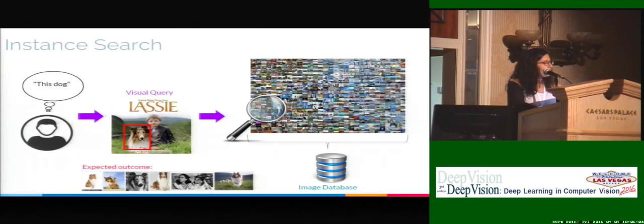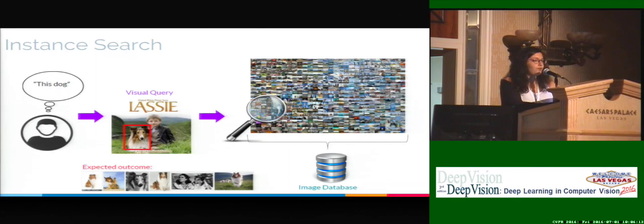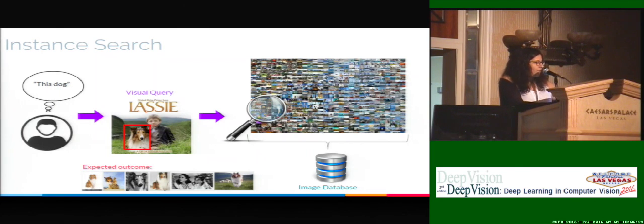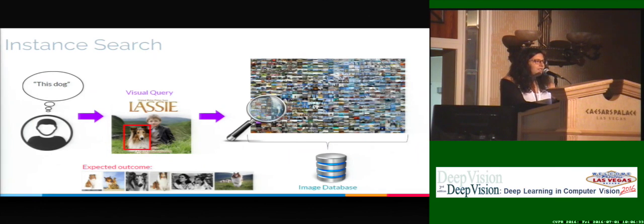In this work, we approached the problem of visual instance search, which is the task of giving a visual query and finding images that are relevant for this query in a big image database. When we refer to instance search, the visual query is defined by a particular instance of a semantic class. For example, we are not looking for images that contain any dog, but we're looking for this specific dog — Lassie in this case.